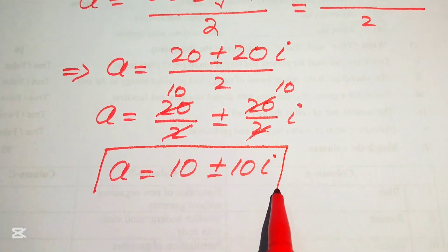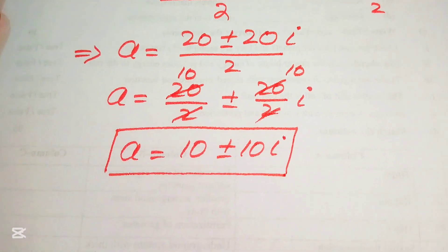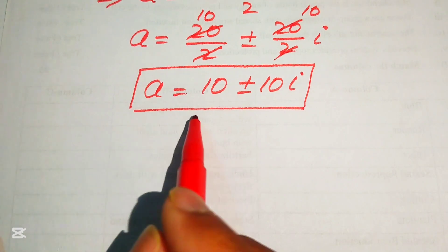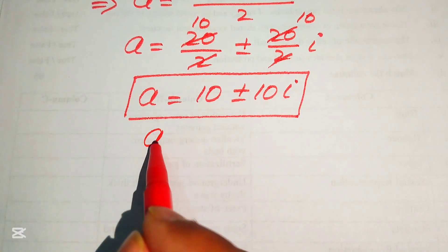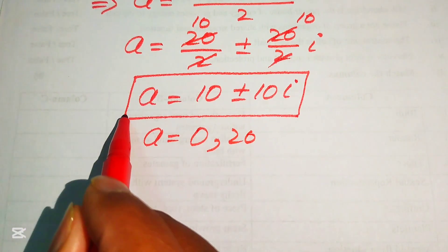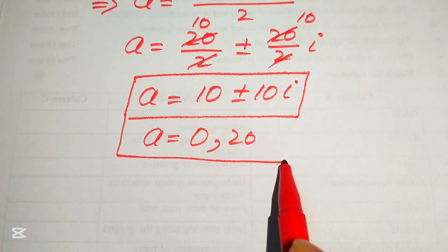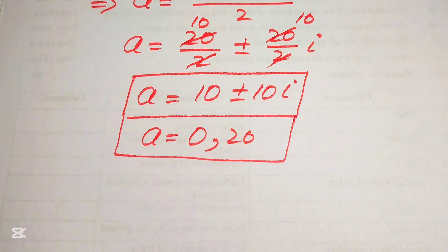These are the two complex roots. The four total roots of the given equation are: a equals 10 plus 10i, a equals 10 minus 10i (the two complex roots), and a equals 0 and a equals 20 (the two real roots). This is the final answer. Thank you for watching — please subscribe to the channel for more videos.